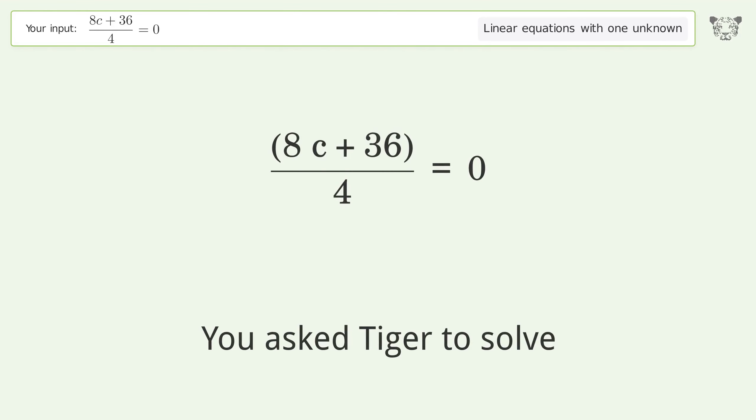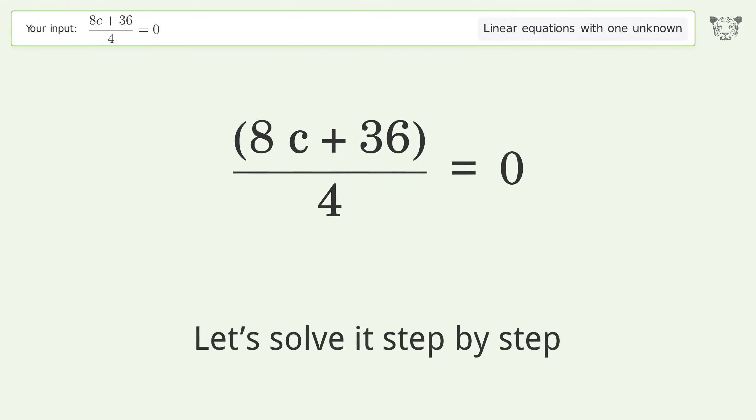You asked Tiger to solve this linear equation with one unknown. The final result is c equals negative 9 over 2. Let's solve it step by step.